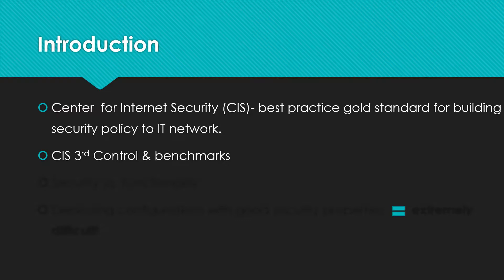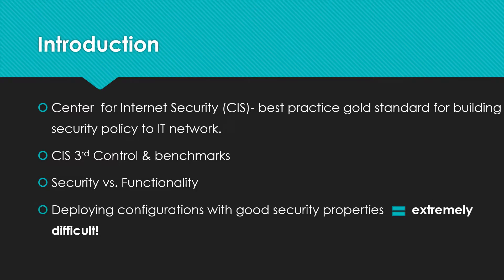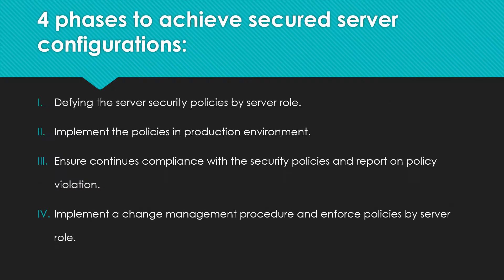Today we'll focus on changing server configurations in order to achieve hardened server infrastructure. The need to change configurations lies in the fact that when delivered from manufacturer or reseller, the operating system is configured by default to provide as much functionality as possible. High functionality defaults often don't comply with security standards. Deploying configuration settings that will address both needs without compromising either of them is extremely difficult. There are four phases in the process of achieving secured server configurations, and each phase is fundamental and cannot be avoided.